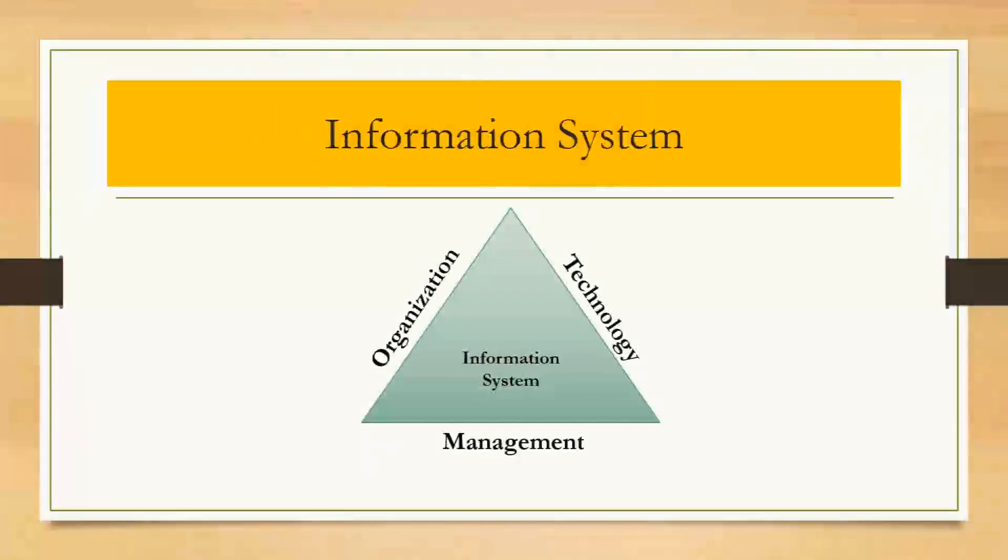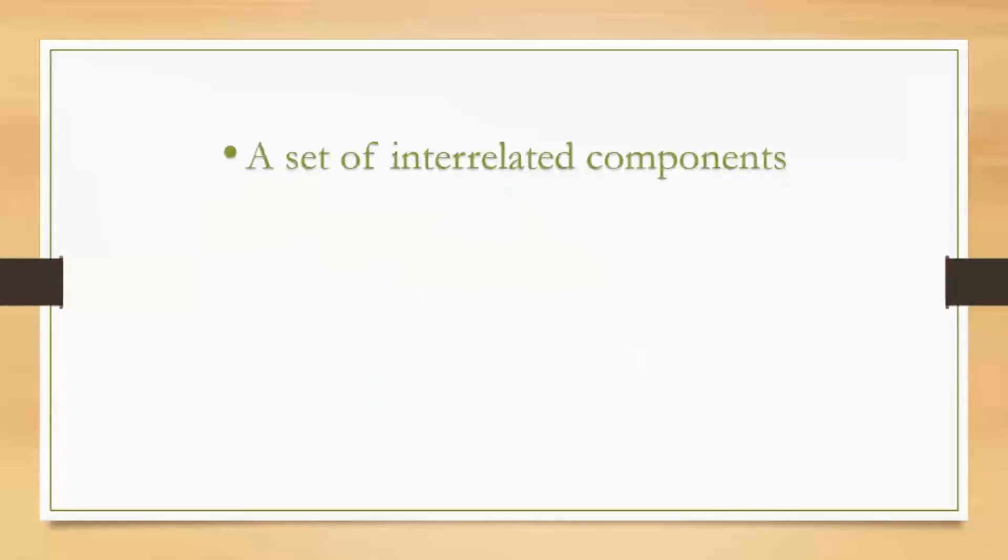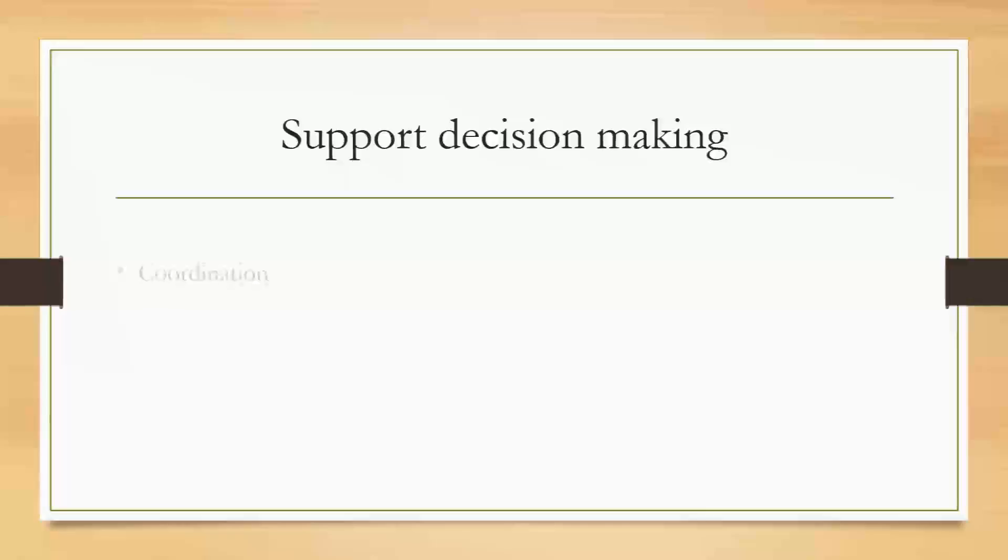An information system can be defined technically as a set of interrelated components that can collect, process, store, or distribute information to support decision making and control in an organization. In addition to supporting decision making, coordination, and control, information systems may help managers and workers to analyze problems, visualize complex subjects, and create new products.